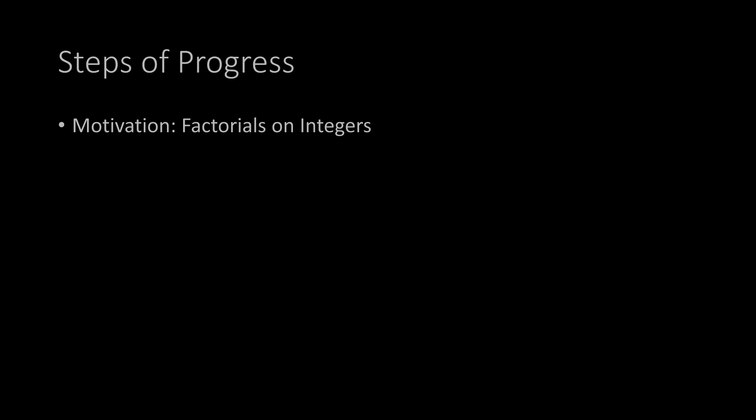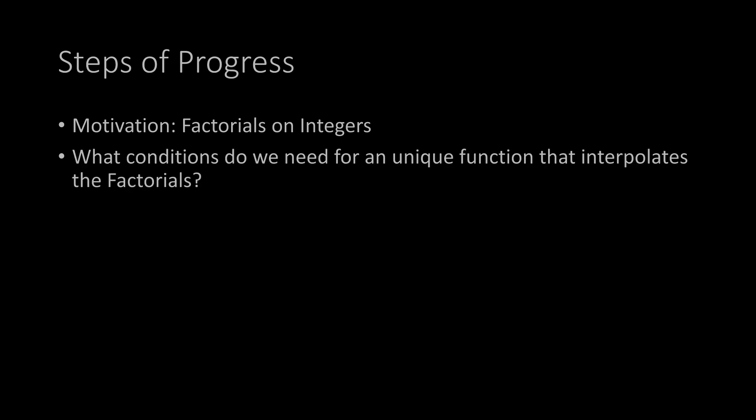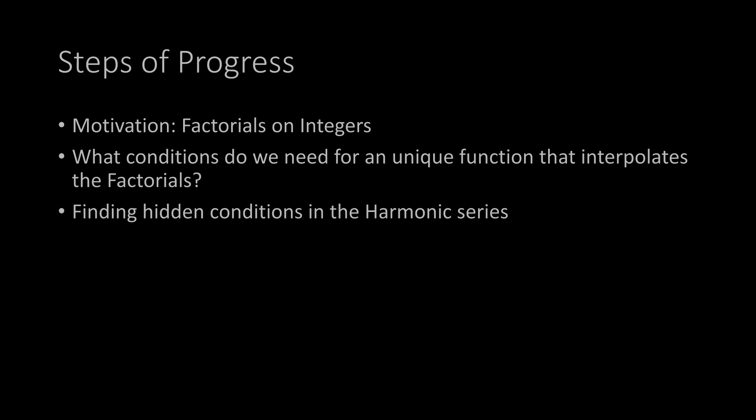We will first start with a motivation by taking a closer look at factorials on the integers — probably you've already heard about that. Then we take a look at how many and what conditions we need to find or define a unique function that interpolates these factorials. After that we try to find some hidden conditions in the harmonic series. And then I'll show you how one representation of the gamma function, the Gauss product, has been found.